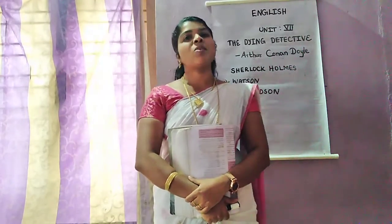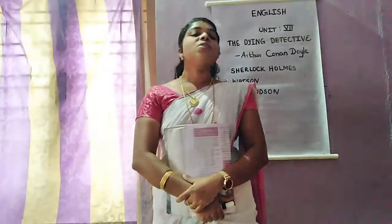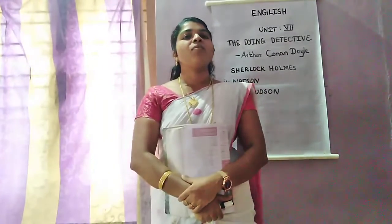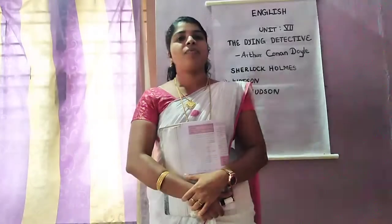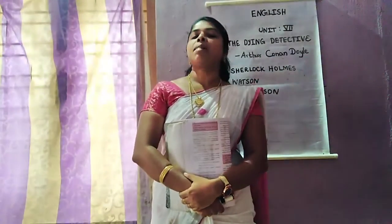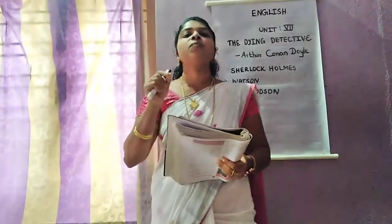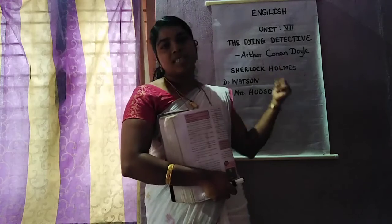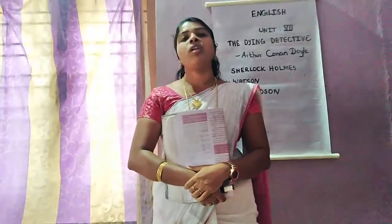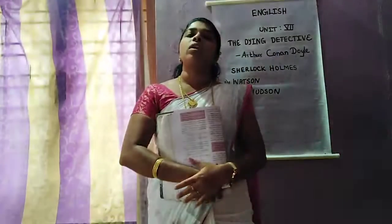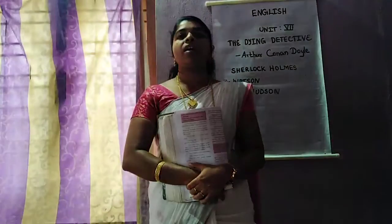Do you like detective stories? I hope you like. This lesson we are going to learn a detective fiction. We can first read one or two lines about the author. 'The Dying Detective' is by Arthur Ignatius Conan Doyle. He was born in the year 1859 and died in 1930. He was famous for his detective fiction featuring the character Sherlock Holmes.